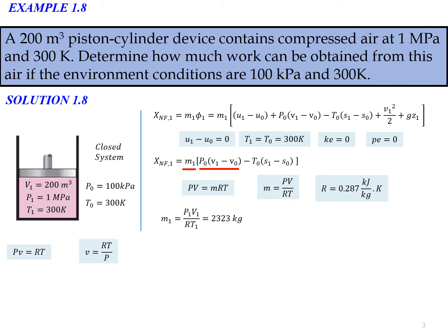Now we look at the second term, P₀(v₁ - v₀). Using specific volume equal to RT/P, we can rearrange to get P₀(v₁ - v₀) equal to R times [T₁/P₁ - T₀/P₀], which simplifies to RT₀ times [(P₀/P₁) - 1].